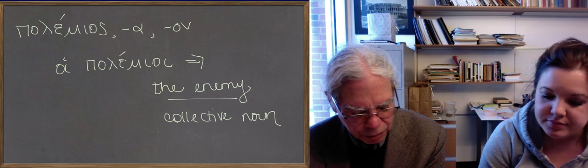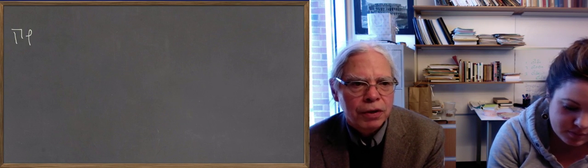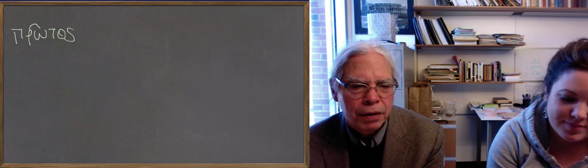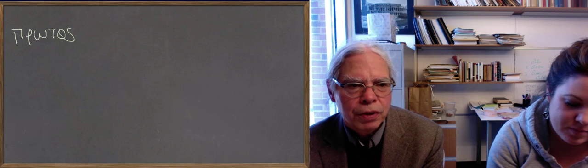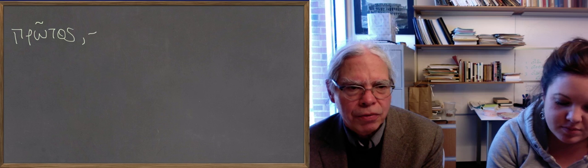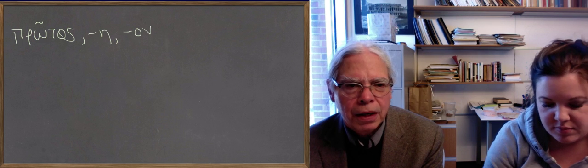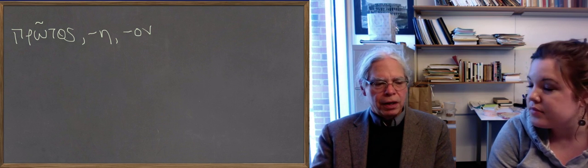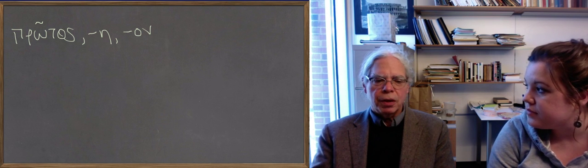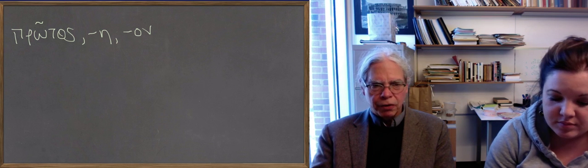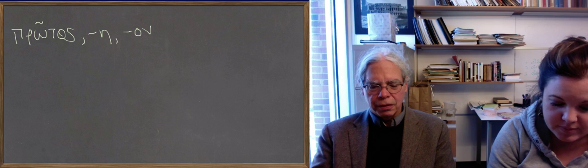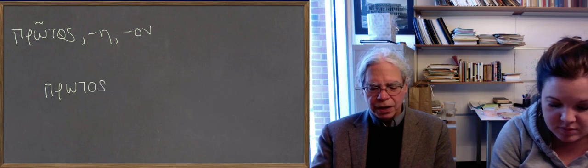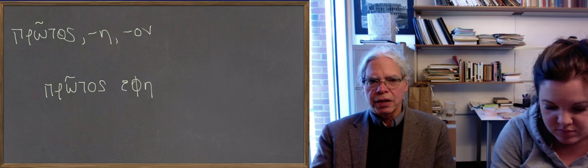Last thing is πρῶτος, the adjective πρῶτος, which has lots of derivatives in English, as in protozoan and prototype and all those things. πρῶτος, πρώτη, πρῶτον, it has three genders. And one of the things that's curious and important about it is that it often is used in the predicate in Greek without an article in front of it. So the standard example of it is in the expression πρῶτος ἔφη. ἔφη is the word for he, she, or it said.